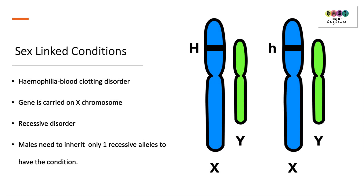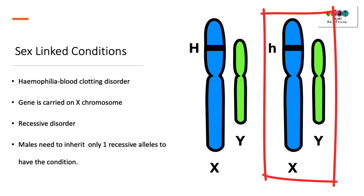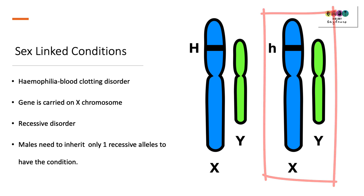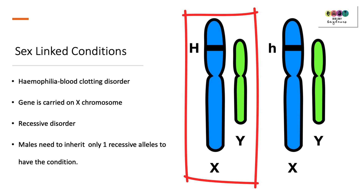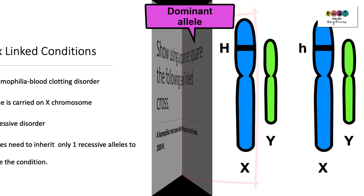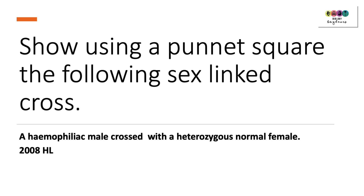So what's the situation with males and haemophilia? Males have the X chromosome and the Y chromosome. Since it's a recessive disorder and the gene is carried on the X chromosome, males only have to receive one copy of the recessive allele to have the condition. So a male who inherits the X chromosome with the recessive allele from his mother and the Y chromosome from his father will have haemophilia, whereas a male who inherits a dominant allele on the X chromosome from his mother does not have haemophilia.